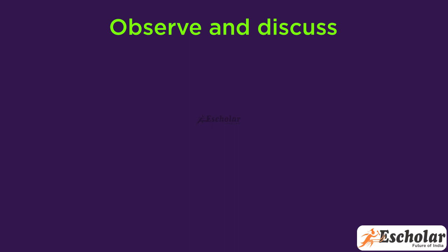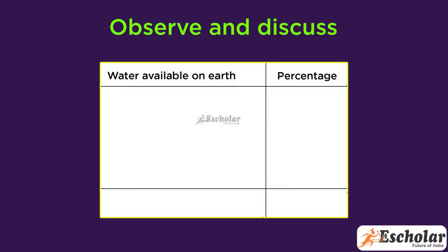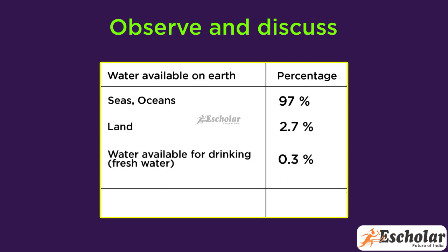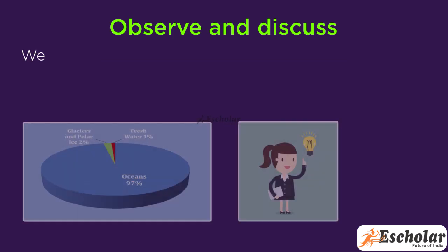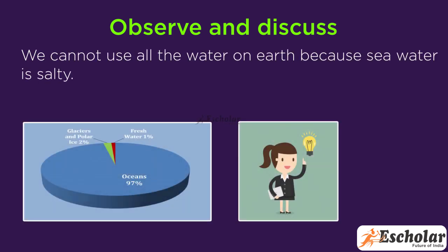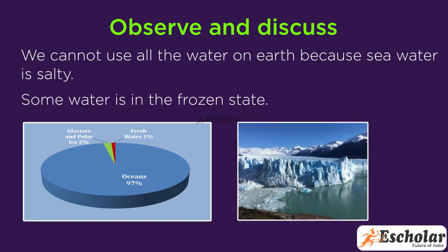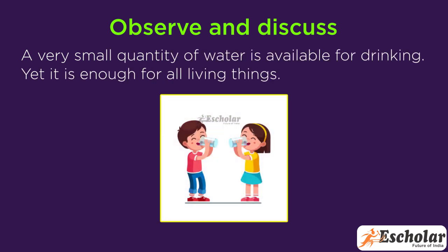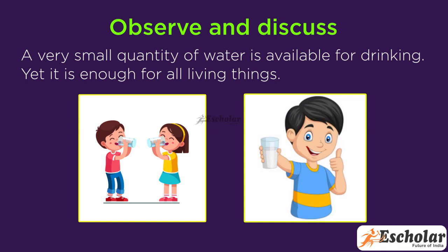Observe and discuss: Water available on Earth by percentage. Seas and oceans make up 97%, land water 2.7%, and water available for drinking (fresh water) only 0.3%, totaling 100%. We cannot use all the water on earth because sea water is salty. Some water is in the frozen state. A very small quantity of water is available for drinking, yet it is enough for all living things.